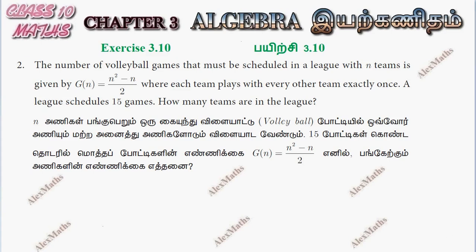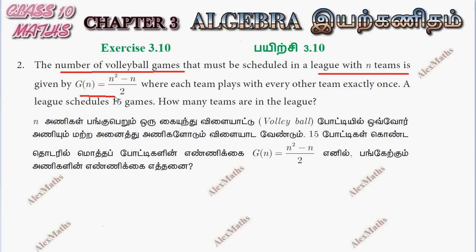Hi students, this is Alex here. XH 3.10, question number 2. The number of volleyball games that must be scheduled in a league with n teams is given by the function g of n.